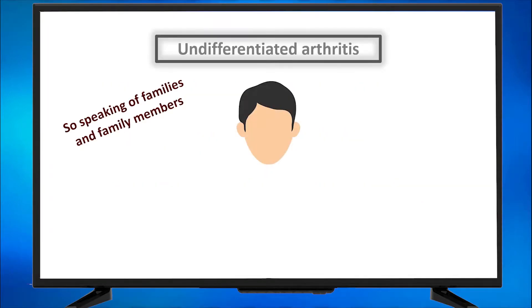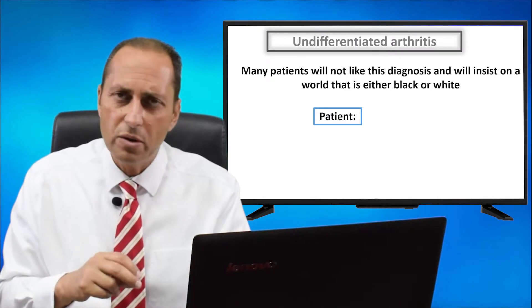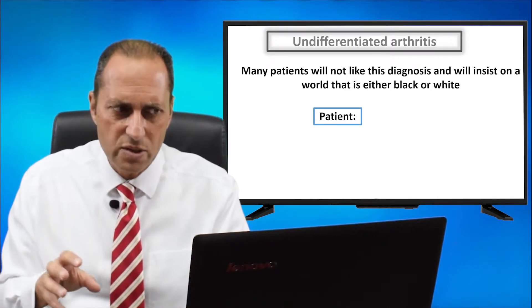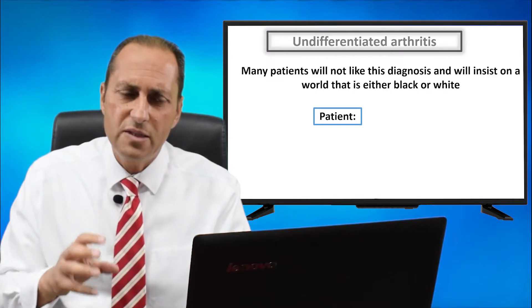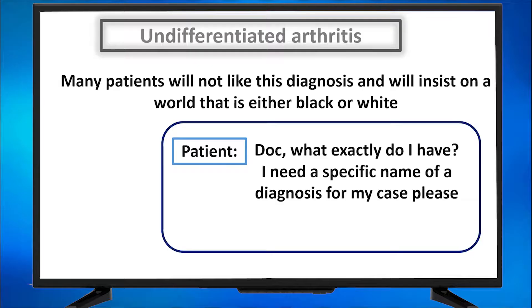Speaking of families and family members, you have the face that is common for the members of the family of autoimmune rheumatic diseases, but no specific features to decide which one of the members of the family you are. Many patients will not like this diagnosis and will insist on a world that is either black or white: 'Doc, what exactly do I have? I need a specific name of a diagnosis for my case, please.'